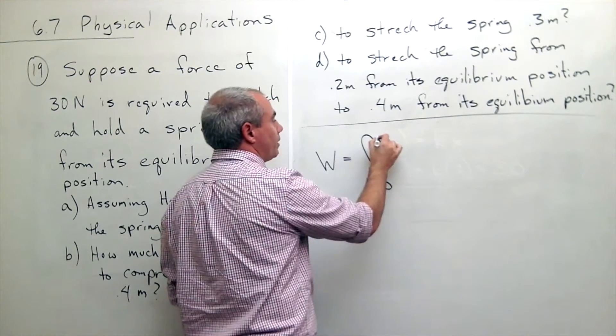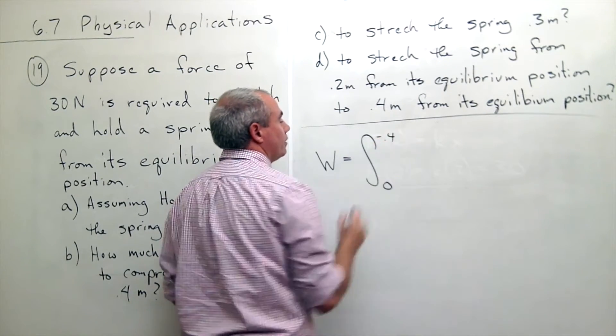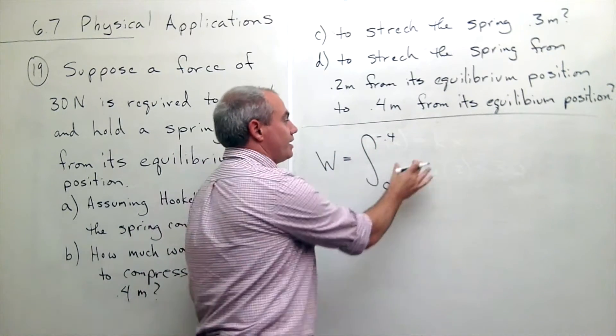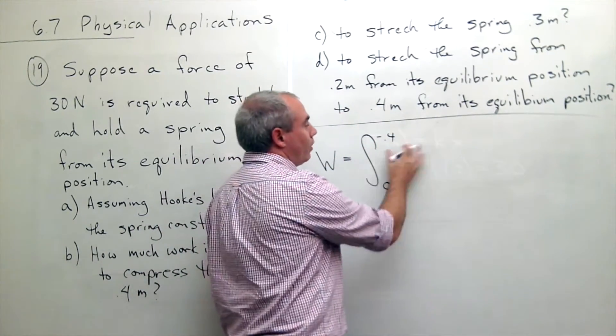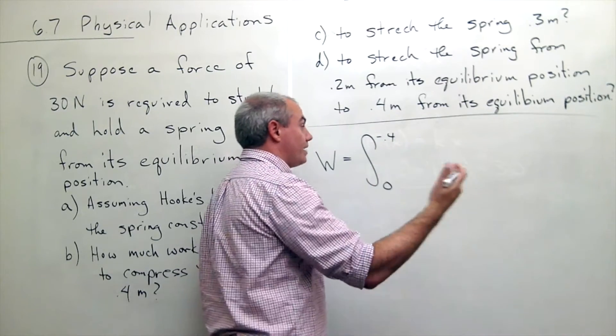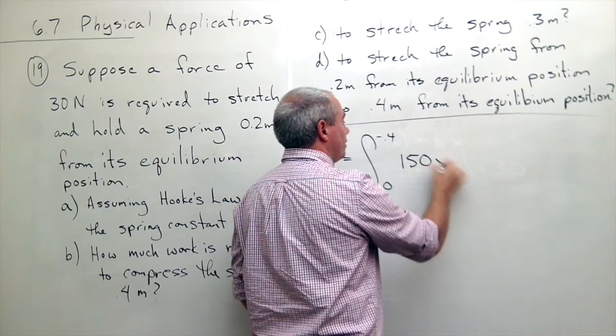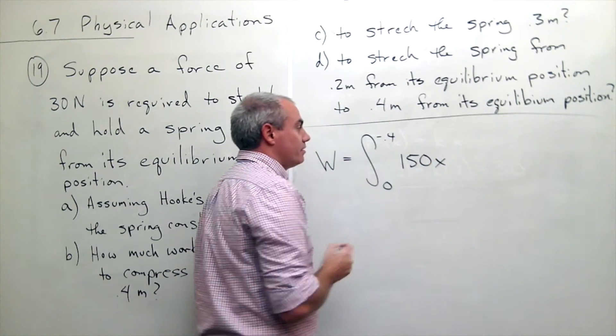So our work in this case is equal to, we're starting at 0 but then we're pushing it back, compressing it to minus 0.4, and then in here we have our force. Well the force we know now is K times X, and K in this case is 150 times X DX.